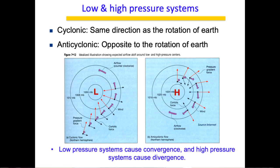Weather charts give us a lot of information about high and low pressure systems. Low pressure systems provide inclement or bad weather because they lead to convergence of winds — the air converges to a central point, updrafts upward, condenses, and forms clouds. High pressure systems, on the other hand, are associated with sunny weather and warm surface temperatures.